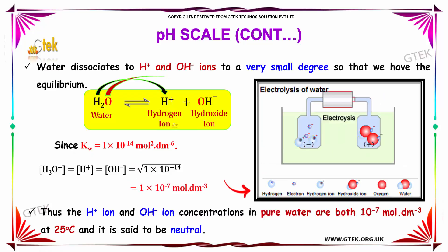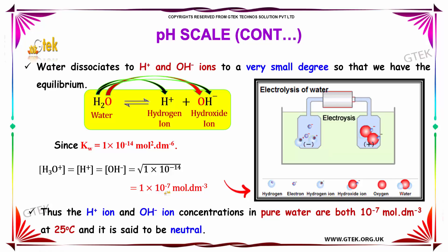Water dissociates to H+ and OH- to a very small degree, so that we have the equilibrium: H2O is in equilibrium with hydrogen ion and hydroxide ion. Since the equilibrium constant of water equals 10 to the power minus 14, the concentration of H3O+ equals the concentration of H+ and OH-, which equals the square root of 1 × 10^-14, giving 10^-7 mol dm^-3. Thus, the H+ and OH- concentrations in pure water are 10^-7 at room temperature, and it is said to be neutral.